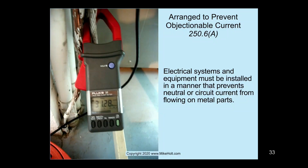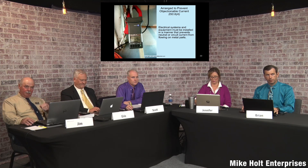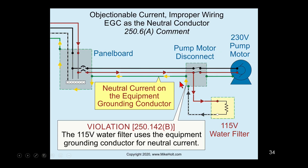Here's a meter showing what might be considered an effective ground fault current path — you can see 31.28 amperes on these bonding conductors. These bonding conductors are only there in the event of clearing a fault; they're not there to be used as a circuit conductor. If you put an amp meter on any equipment grounding conductor in a panel and it's carrying current, that's a problem. That wire is just sitting there waiting in the event of a fault — it's not supposed to be carrying current.